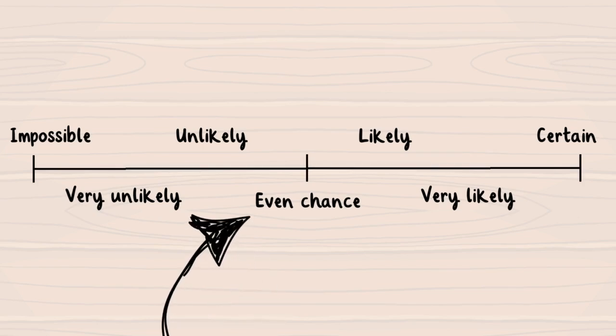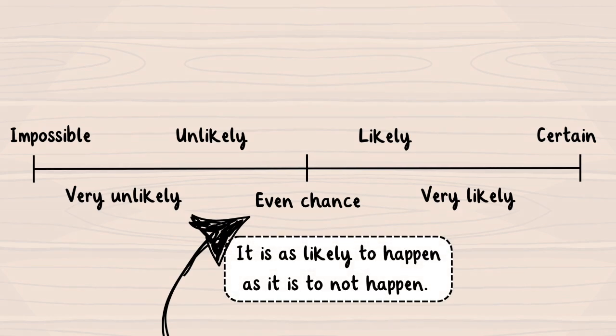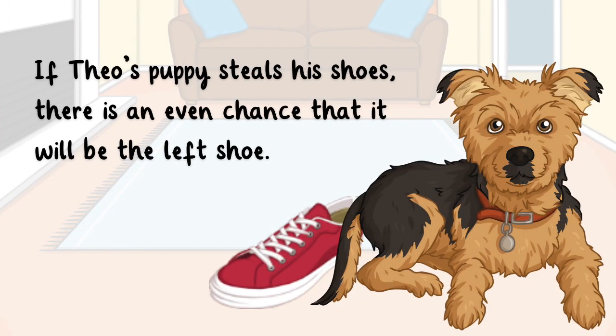When the probability of an event is even chance, this means that it is as likely to happen as it is not to happen. For example, if Theo's puppy steals his shoes, there is an even chance that it will be the left shoe.